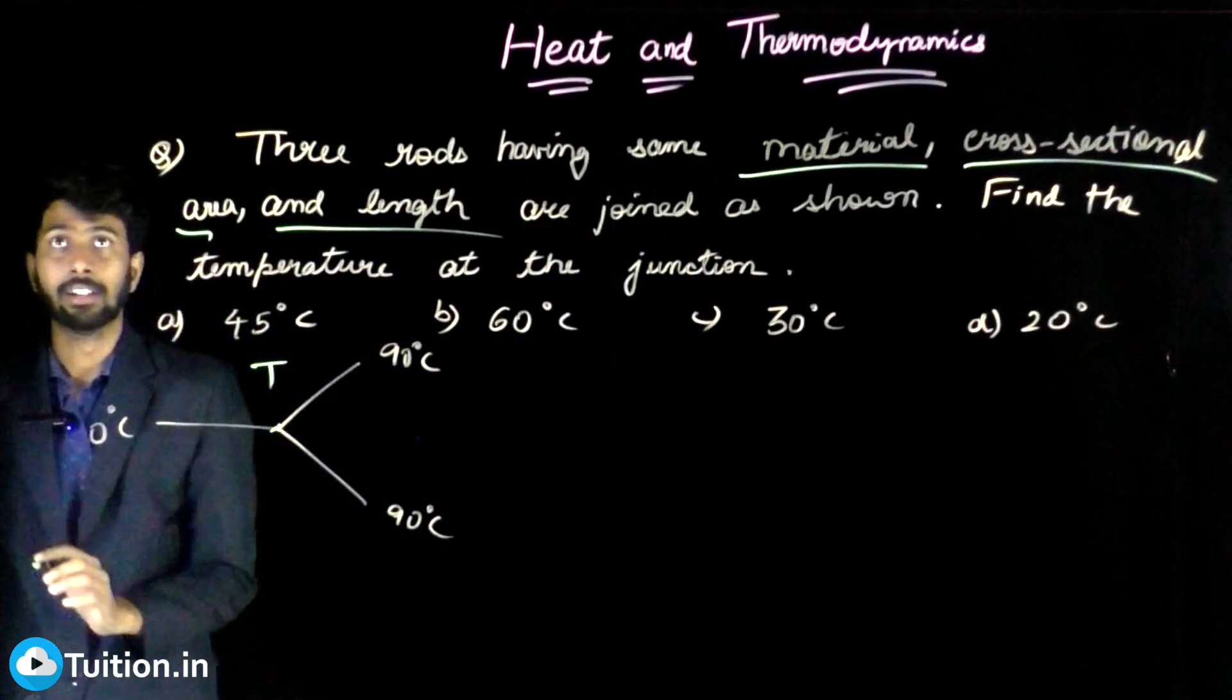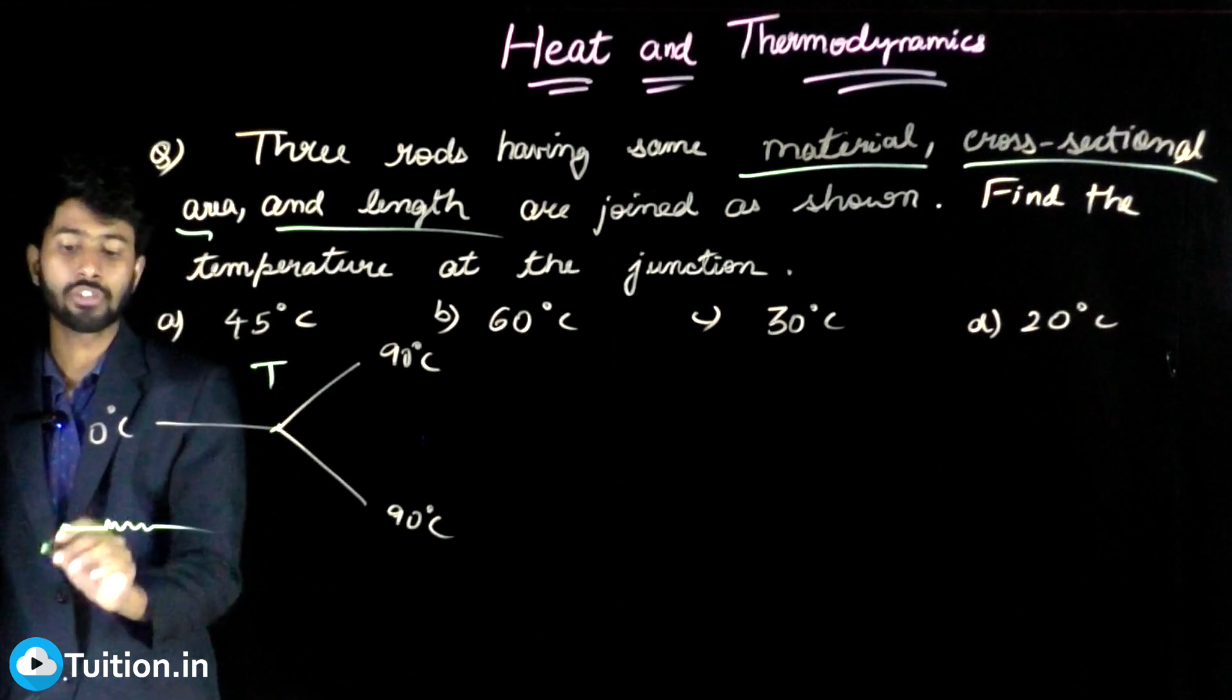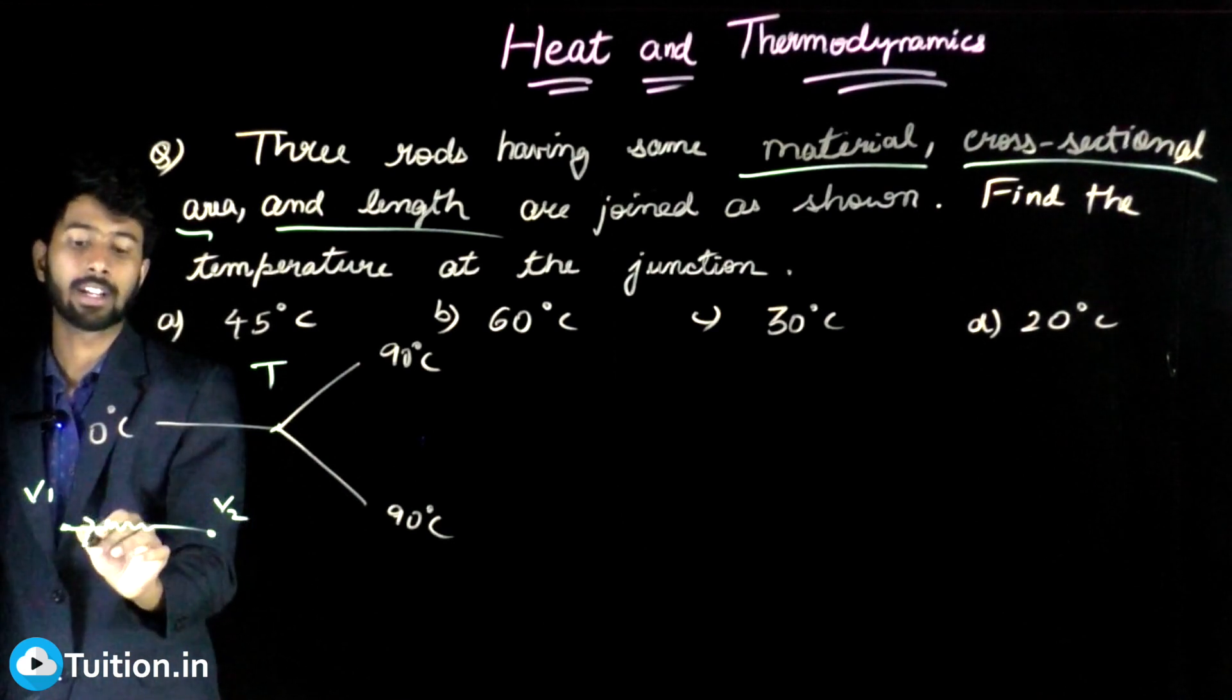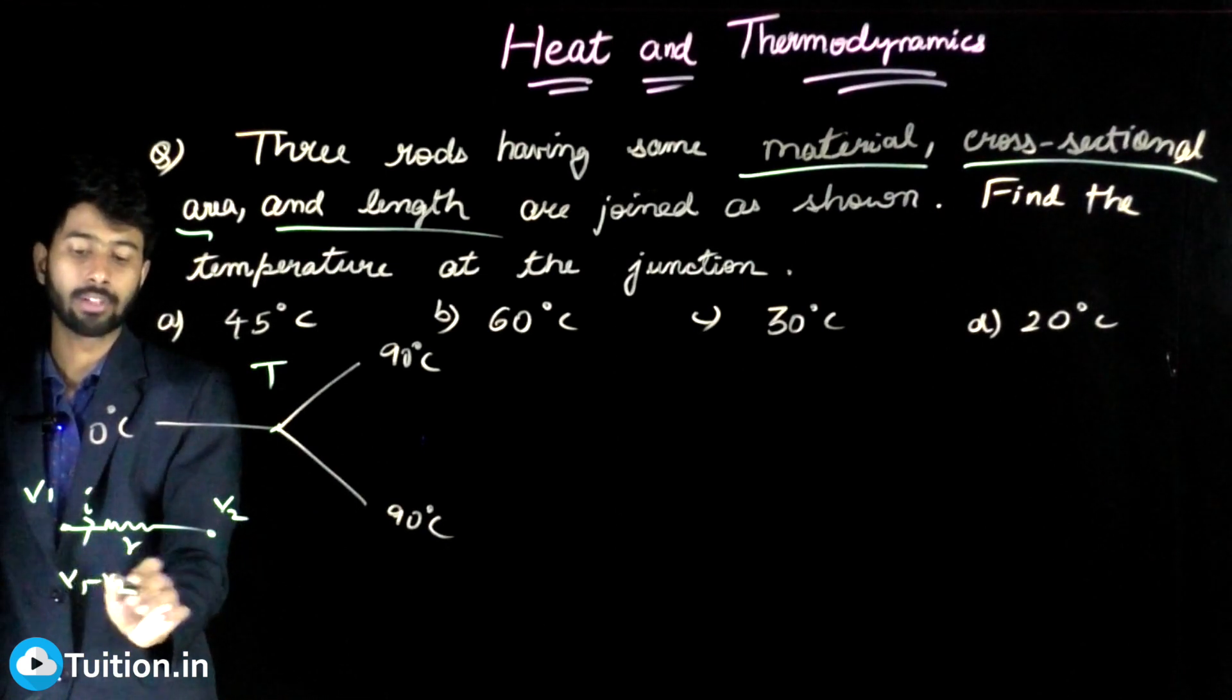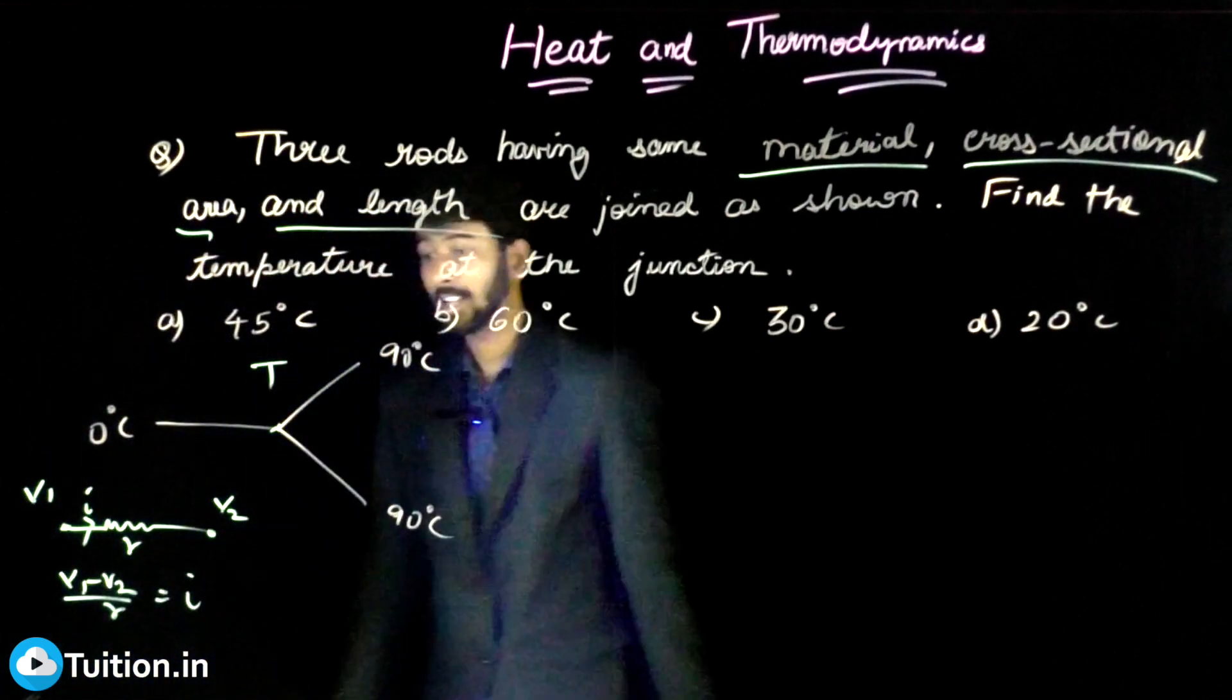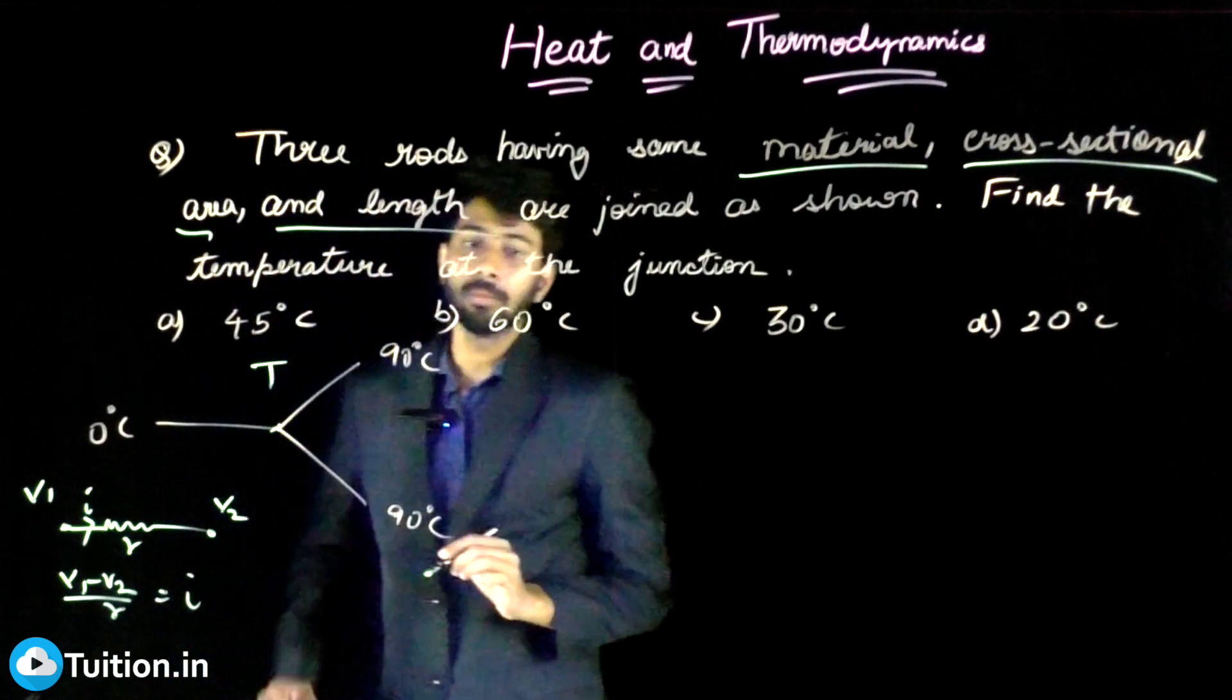Just like a resistor, if I put potential difference V1, V2, there is a current I which flows, which is given by this formula. If this is greater than this, then this will be V1 minus V2 by R. That is what your I will be. Similarly here, let me assume...